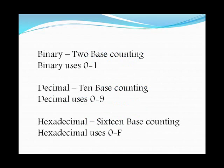Binary supports a base-two counting system — it uses only zero and one. Decimal is what we use on a daily basis; just about every culture in the world uses the decimal system, which uses numbers zero through nine. Then you have hexadecimal, which is used for things such as MAC addresses as well as IPv6.